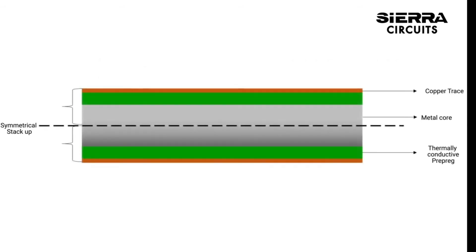The stack-up should be symmetrical on either side of the metal core in a multi-layer board. The number of layers on the top core should be equal to the layers on the bottom. The symmetry is needed to evade warpage issues.